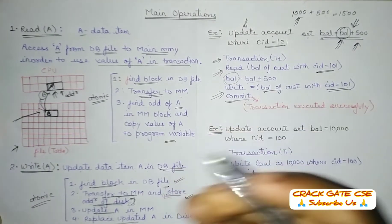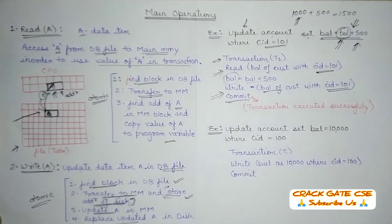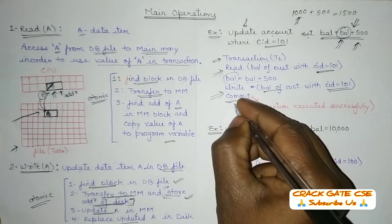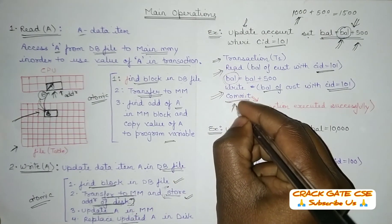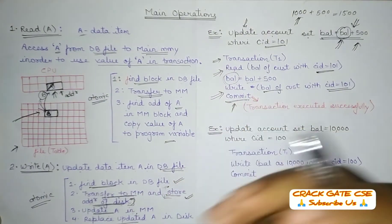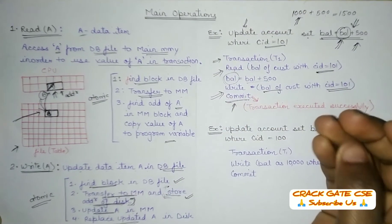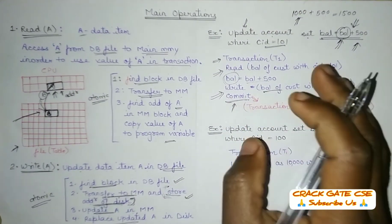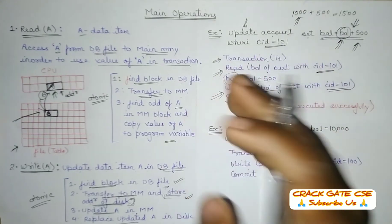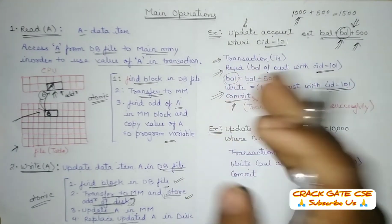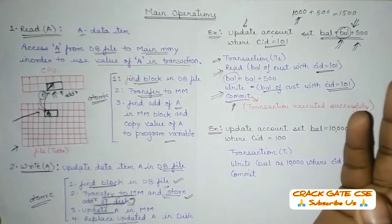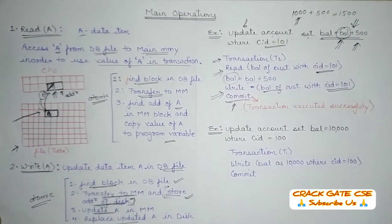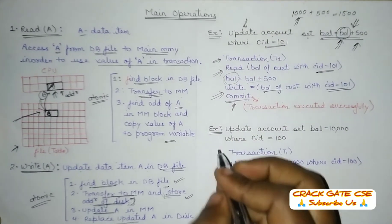After successful execution, we use commit to indicate the transaction completed successfully. If there is no commit or if there is any error, we have to rollback. We will be learning about rollback, checkpoint, and other topics in upcoming videos.